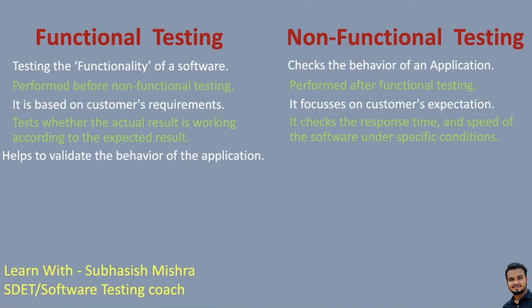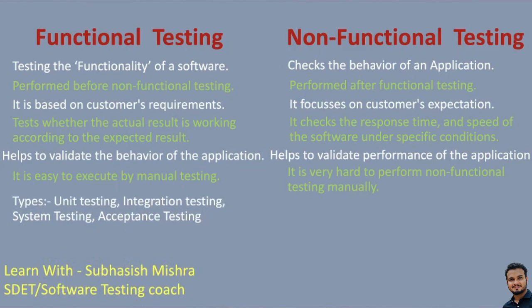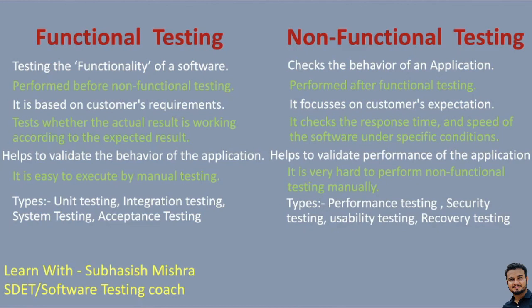Functional testing tests whether the actual result is working according to the expected result, whereas non-functional testing checks the response time and speed of the software under specific conditions. Functional testing helps validate the behavior of the application, whereas non-functional testing helps validate the performance of the application. Functional testing is easy to execute by manual testing, whereas non-functional testing is a bit difficult to do manually — we use automation tools like JMeter and LoadRunner for non-functional testing.